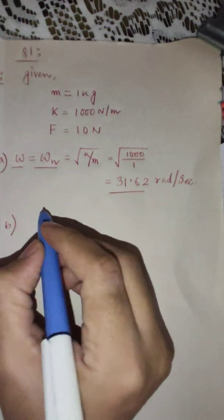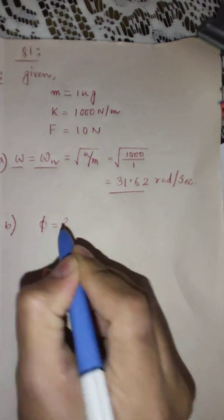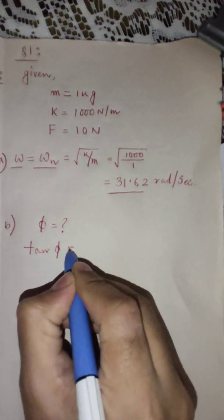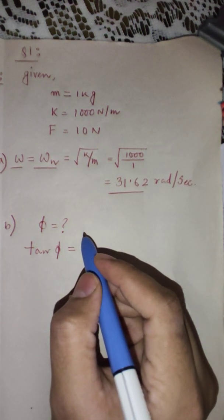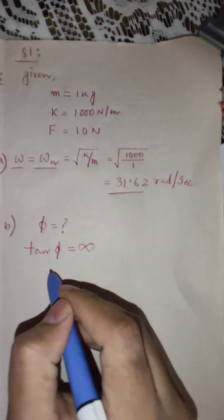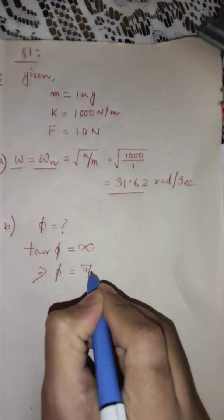We are required to find out the value of phi. This can be directly found because we have the tan phi equation. But since in this particular problem it is resonance, tan phi is always infinity or phi is equal to pi by 2.